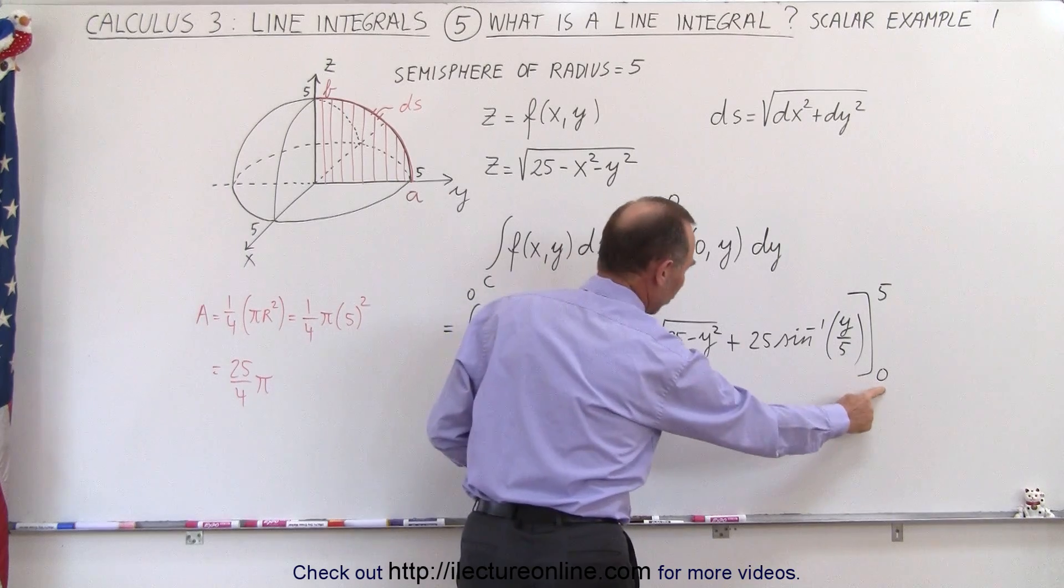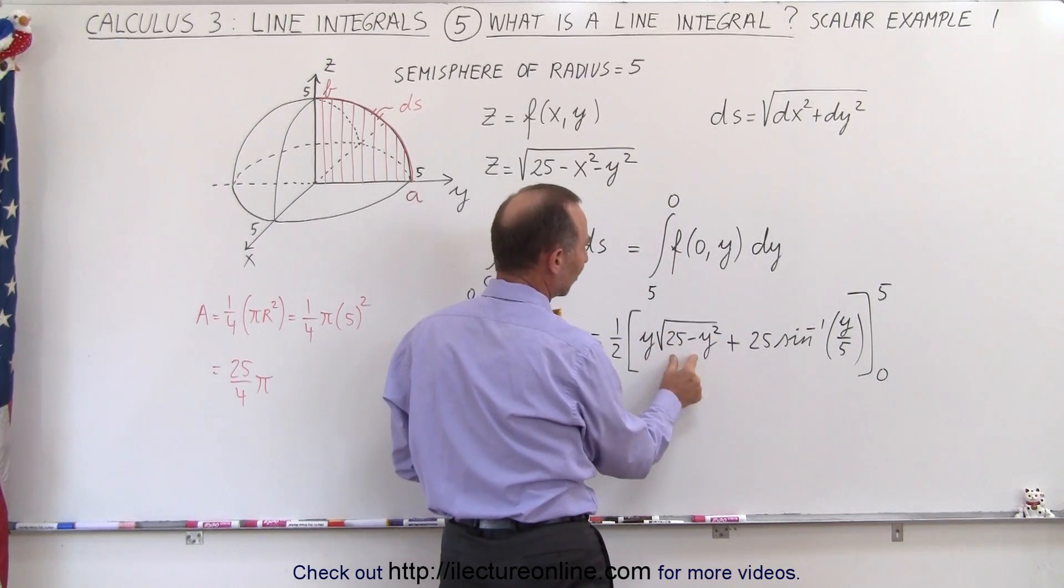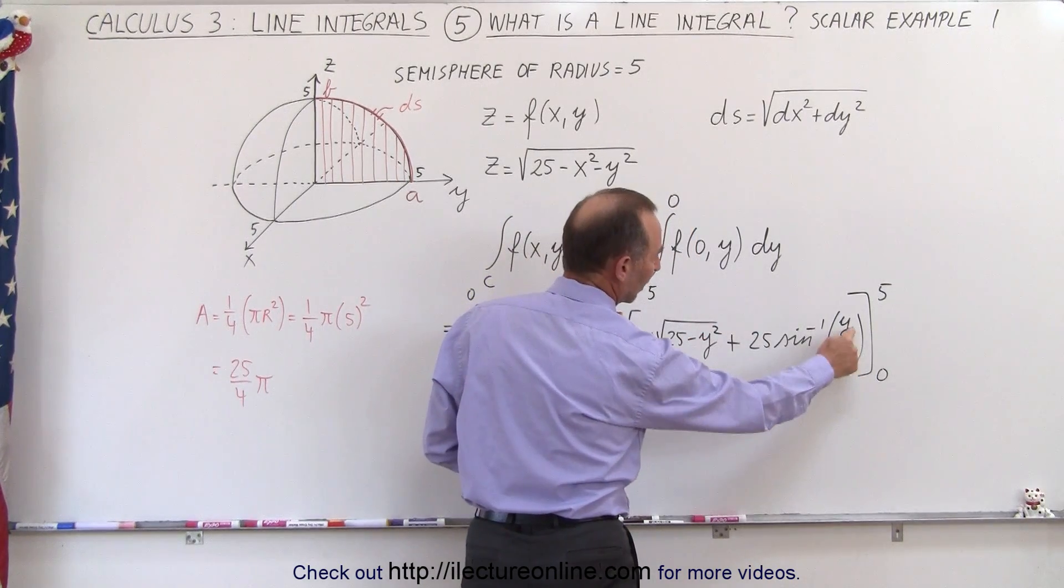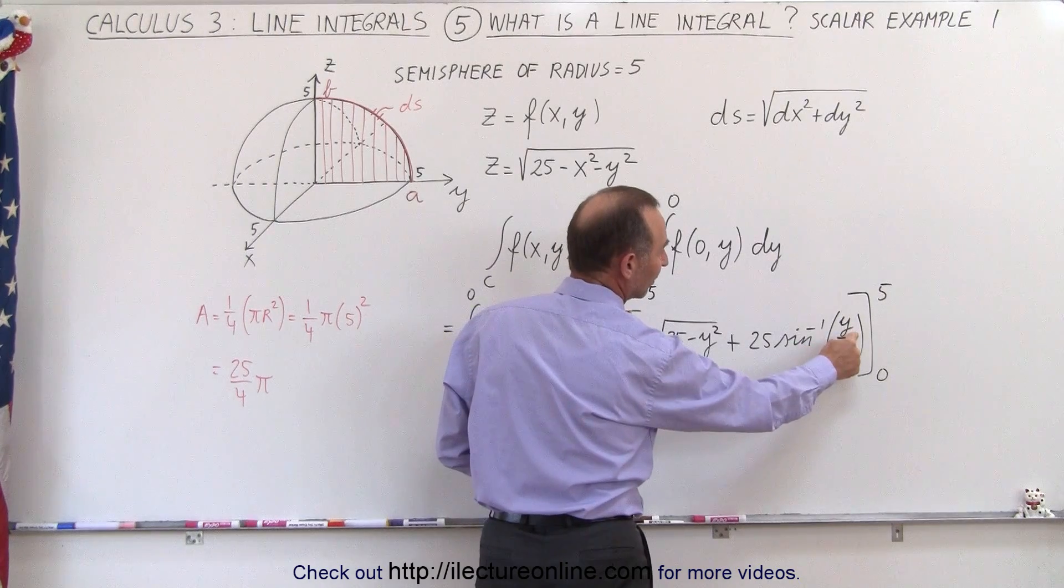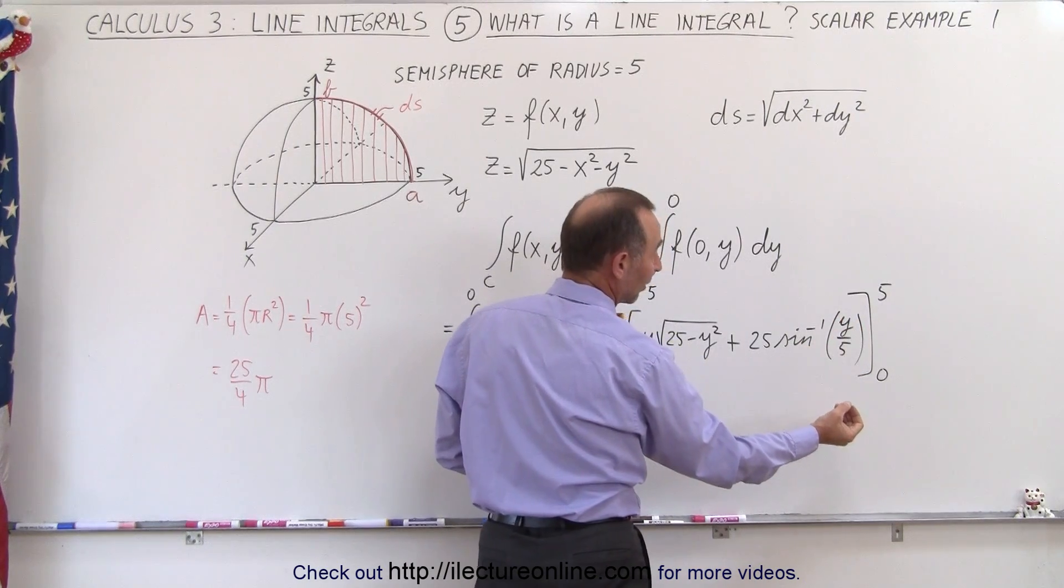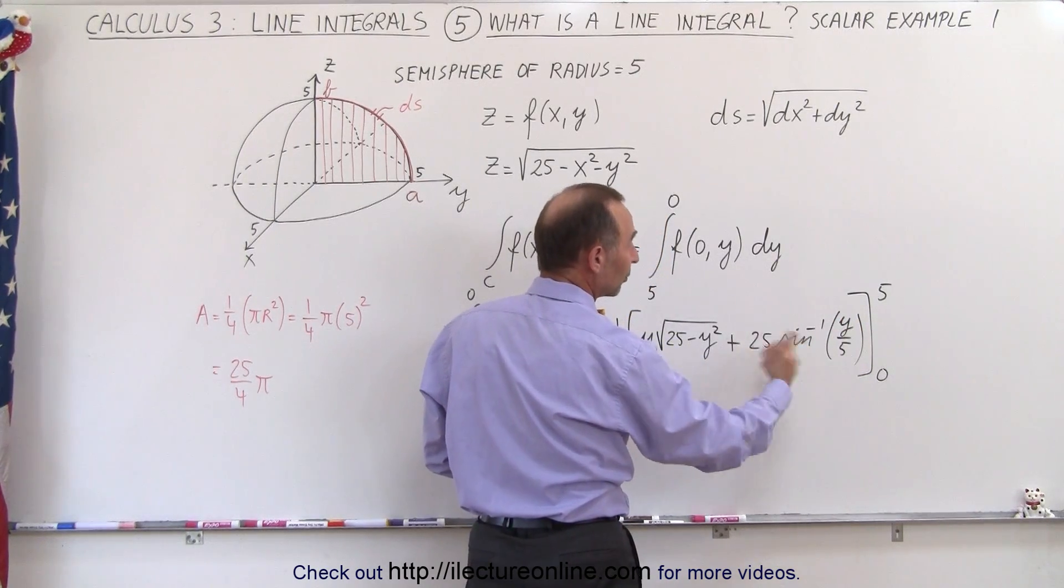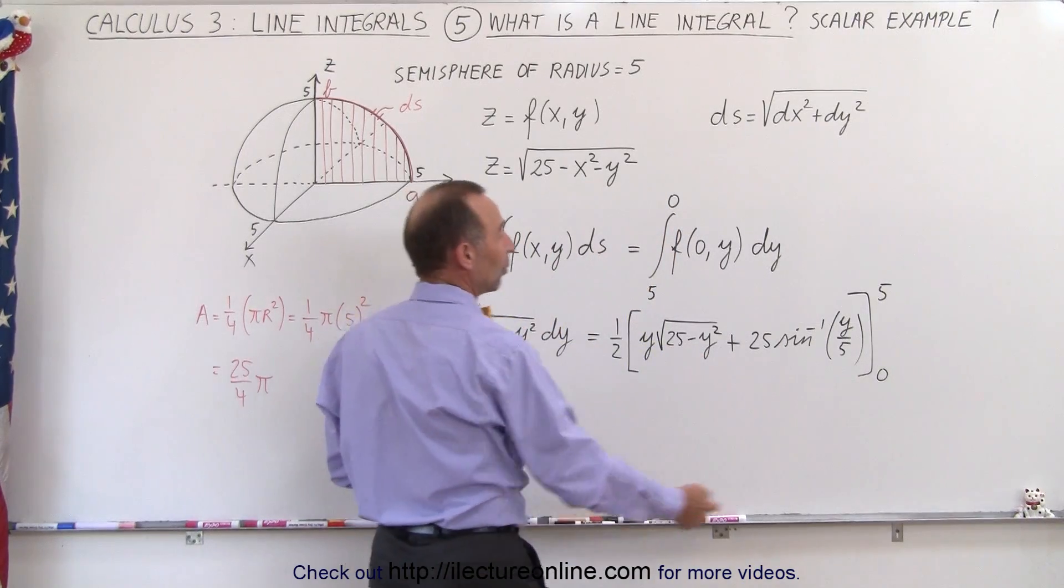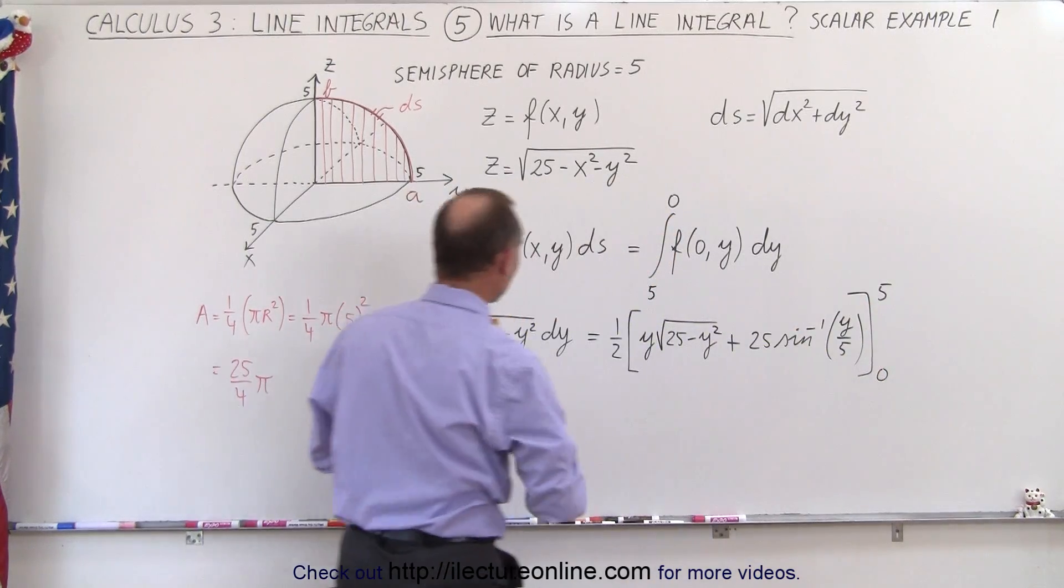Now, clearly, when plugging the lower limit, we get a 0 times this. This is 0. And the lower limit here, the arc sine of 0, that would be 0 as well, because when the angle is 0, the sine of that would be 0. So we only need to worry about plugging at the upper limit.